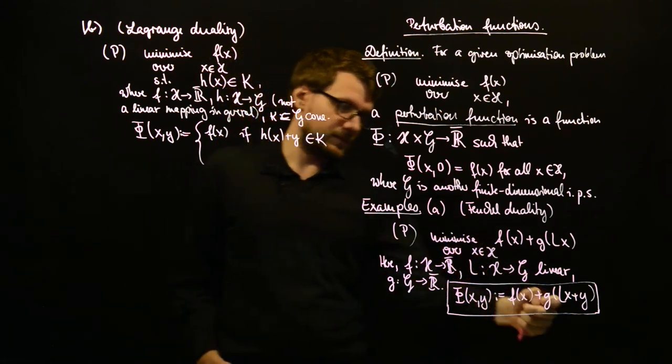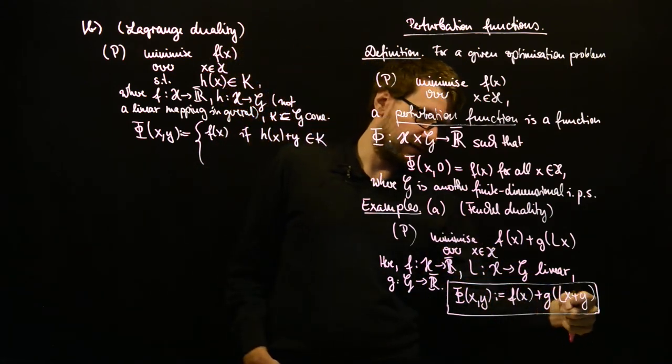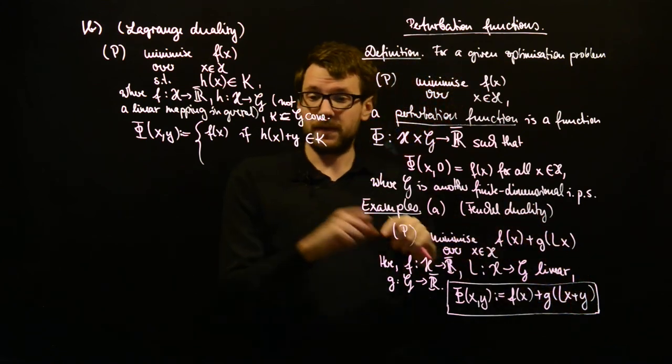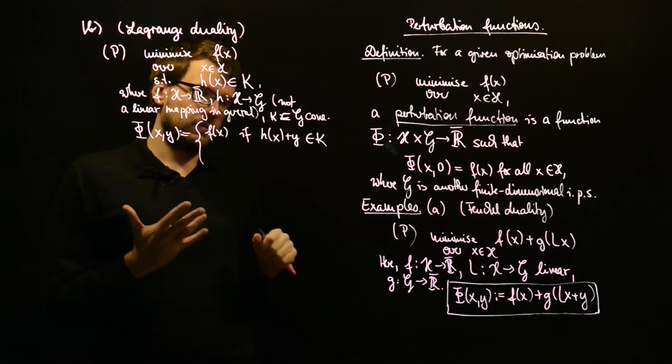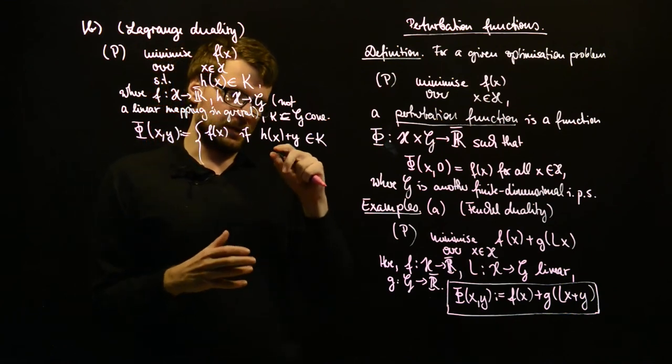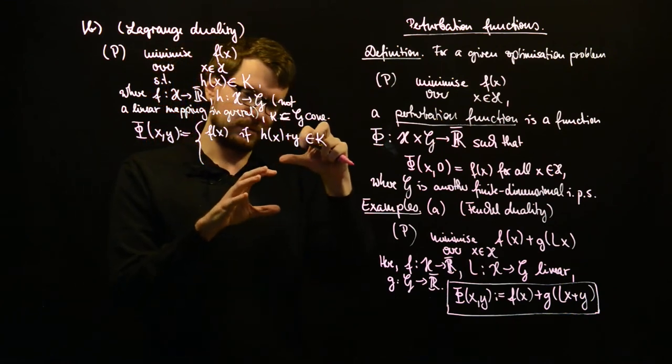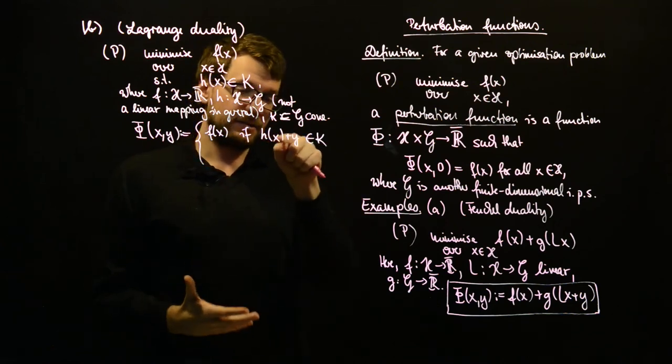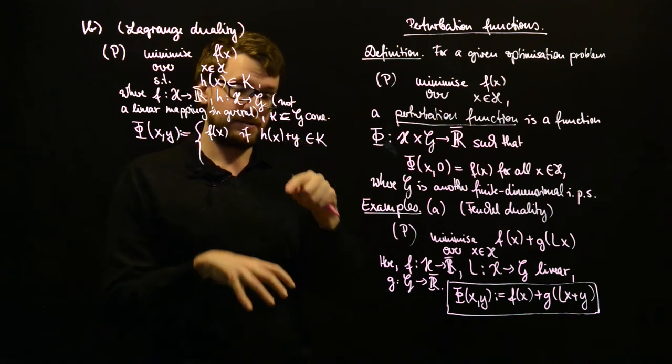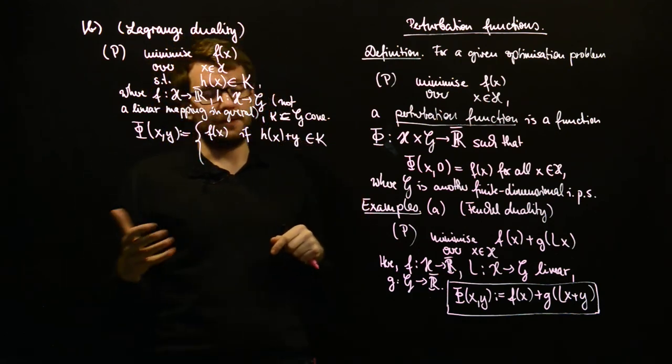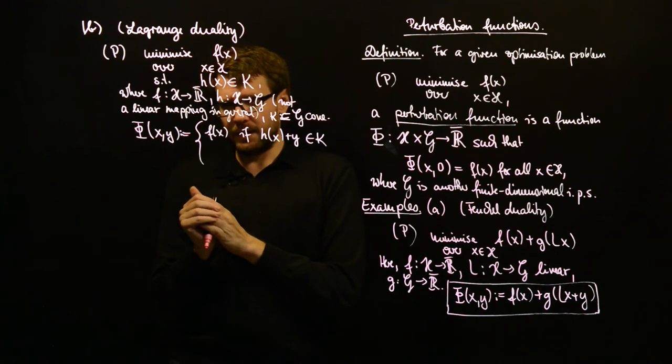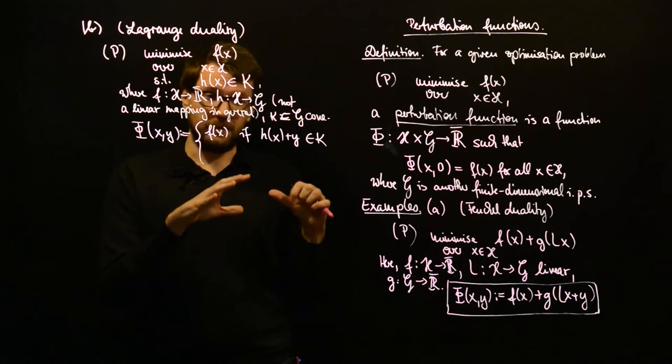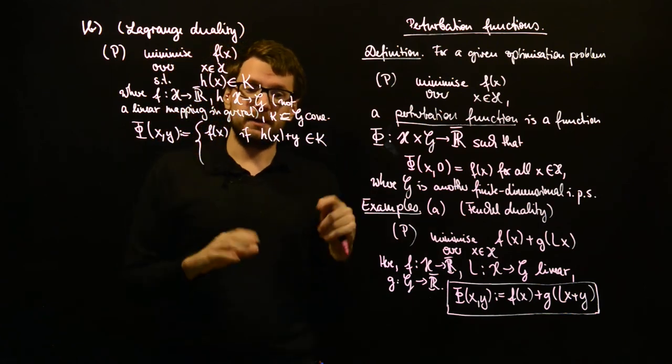So, here the perturbation corresponds to some perturbation in the constraints. So, as we had here, the y was like a decoupling of these two functions, f and g. And here the y goes into the constraints. So, we assume that not h of x should be in K, but h of x perturbed by the vector y should be in K.